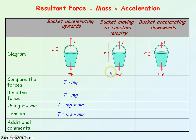If the bucket is moving at a constant velocity, it is not accelerating, so the resultant force is zero. Therefore the tension will equal the weight. This is true whether the bucket is moving upwards at a constant velocity or downwards at a constant velocity — because it's not accelerating, the tension equals the weight for the resultant force to be zero.